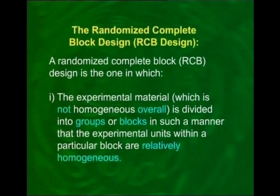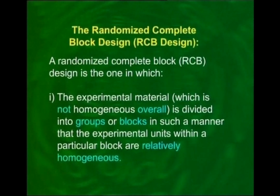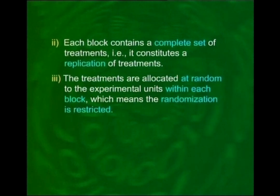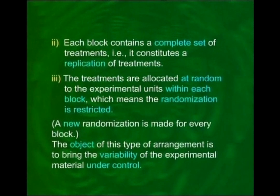A Randomized Complete Block (RCB) design is one in which: (1) the experimental material is divided into groups or blocks such that units within a block are relatively homogeneous, while the overall material is not homogeneous; (2) each block contains a complete set of treatments, constituting one replication; (3) treatments are allocated at random within each block — meaning randomization is restricted, with a new randomization made for every block.